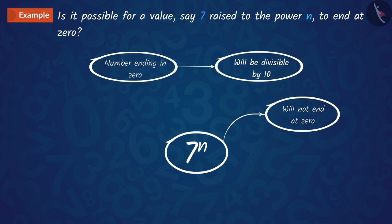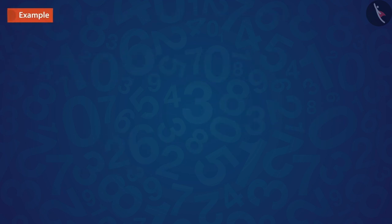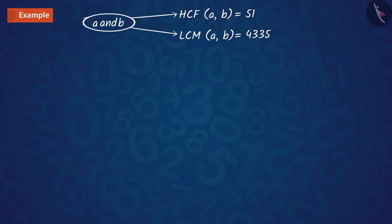Let us look at another example. The HCF and LCM of two numbers A and B are 51 and 4335 respectively. If A is equal to 255, find the value of B.